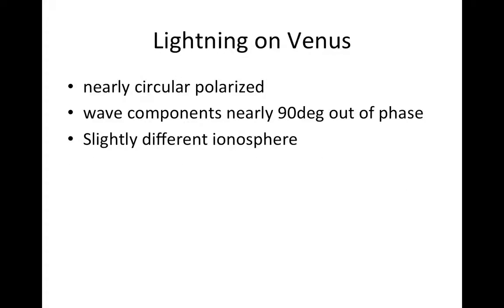They found lightning on Venus, but it was nearly circular polarization, which is exactly what we expect. The wave components are nearly 90 degrees out of phase, which also makes sense since we know that E must be perpendicular to B and B must be perpendicular to K.